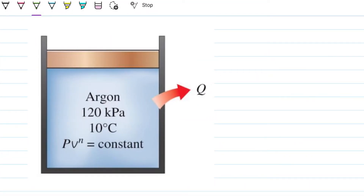Hello guys and welcome back to Engineering Hack, where we try to solve engineering problems in a way that's hopefully easy to understand. Today we're tackling a problem around the first law of thermodynamics. We have argon, so we have an ideal gas, and this is a polytropic process. So that's where we are in the realm of thermodynamics.